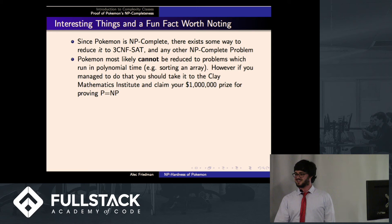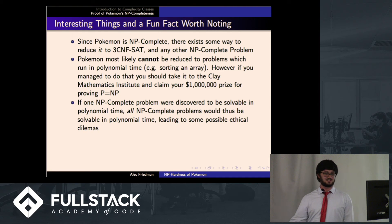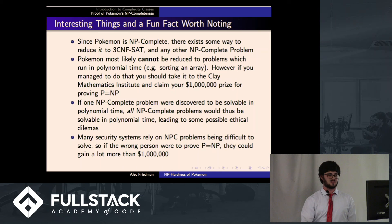Do you still get the million to prove that P does not equal in P? Yeah, yeah. If you solve the problem at all, you get the million. Yeah, so if one NP-complete problem were discovered to be solvable in polynomial time, all NP-complete problems would be solvable in polynomial time, which would lead to some possible ethical dilemmas. Namely, a lot of security systems rely on these NP-complete problems being difficult to solve. So if the wrong person were to solve P equal to NP, they could probably gain a lot more than a million dollars through some shady business.